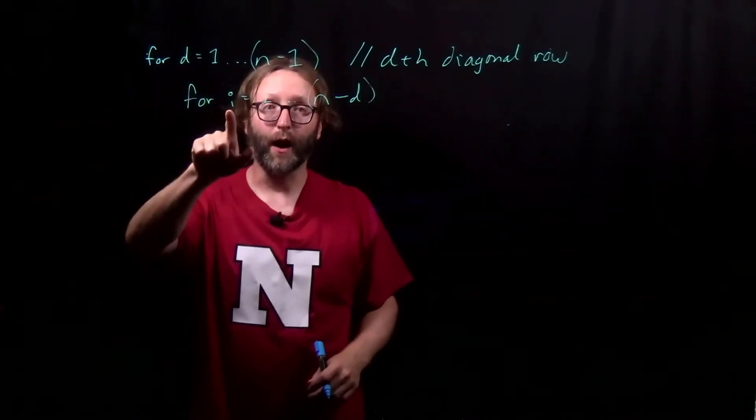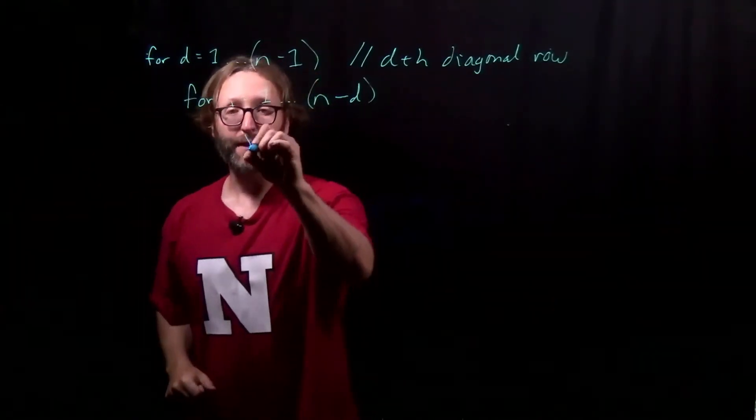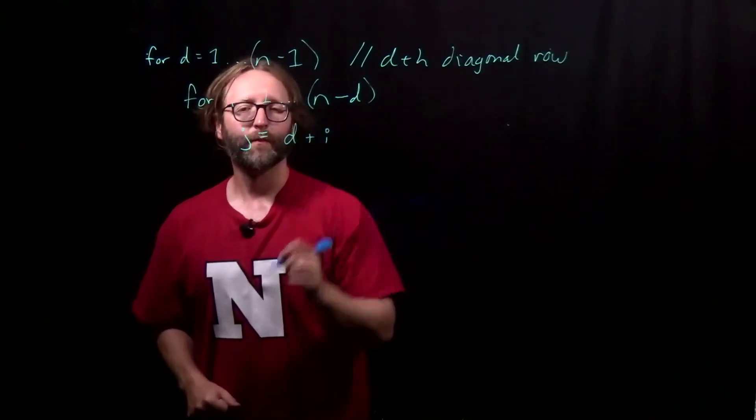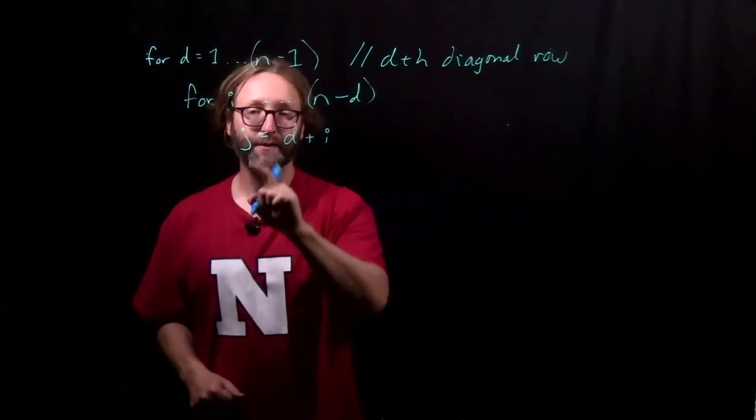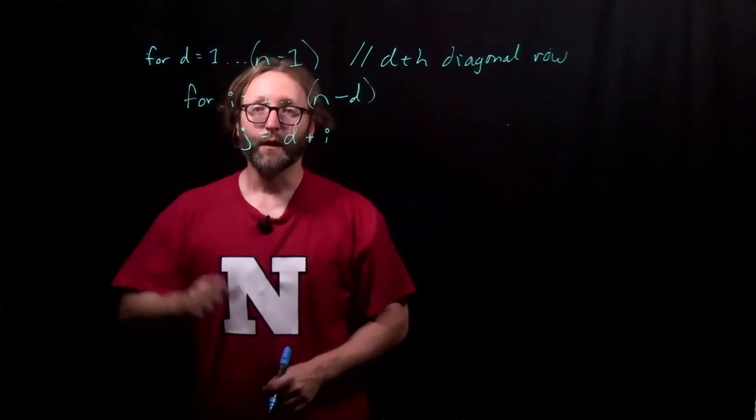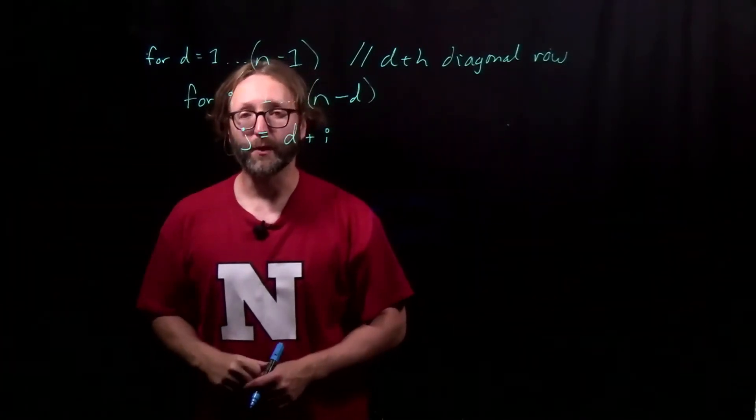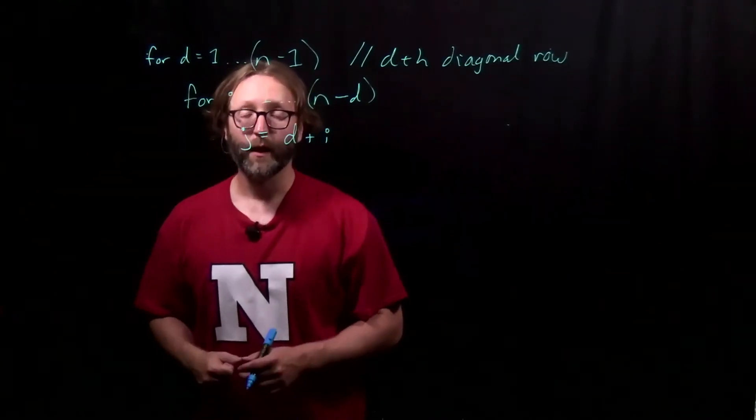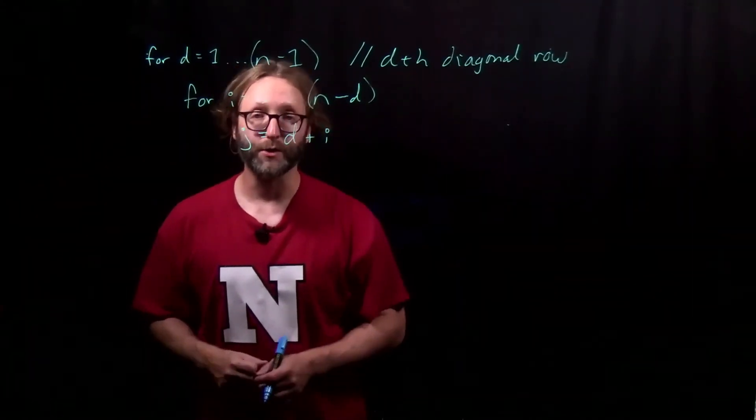Computing D allows us to compute i and j. i is acting as an offset to compute j. Given i and j, we need to compute c sub i j. To do that, we need to run over all the possible values of l, and pick the minimum one according to our recursion.